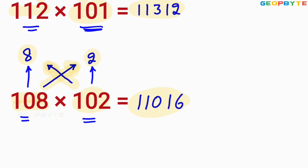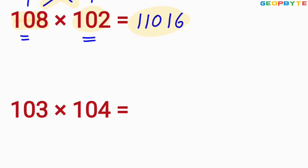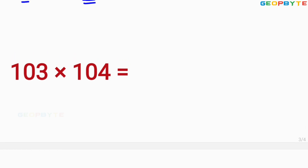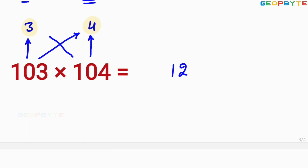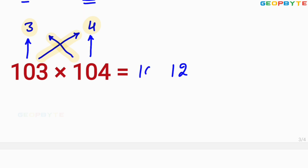Similarly, let us take the multiplication of 104 and 103. This 103 is more than 100 by 3, and 104 is more than 100 by 4. Multiply 3 and 4. What is 3 into 4? 3 into 4 equal to 12. Then you add 103 and 4 or 104 and 3. What is 103 plus 4? 107. Similarly, 104 plus 3 also equal to 107. So 10712 is the value of 103 into 104.